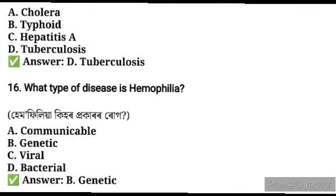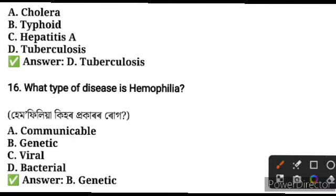Which type of disease is haemophilia? Haemophilia is a genetic type of disease.